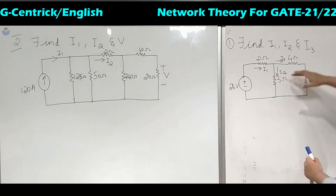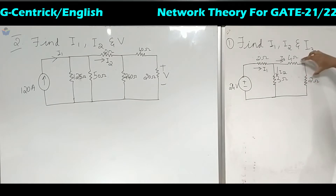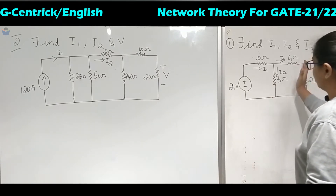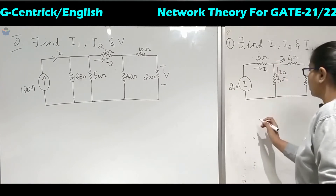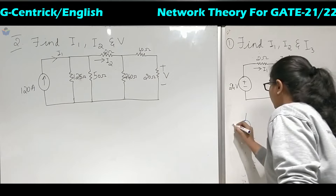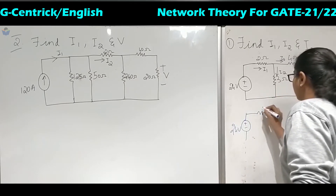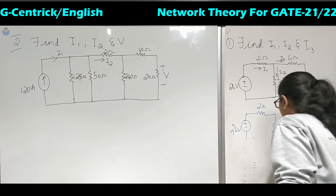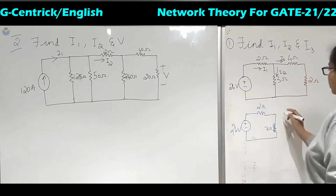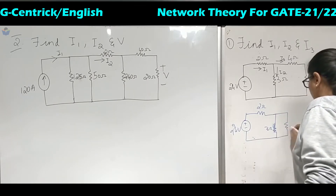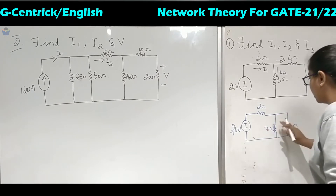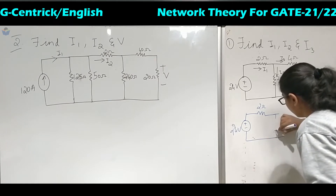We will come from the end back to the start. This 4 ohm plus 2 ohm are in series because the same current is flowing through both resistors, so 4 plus 2 is 6 ohms. This 6 ohm is in parallel with 3 ohm. So the circuit becomes: 24 volts, 2 ohm as it is, then 3 ohms and 6 ohms in parallel. 6 into 3 is 18, 18 over 9 is 2 ohms, so this is replaced with 2 ohms.